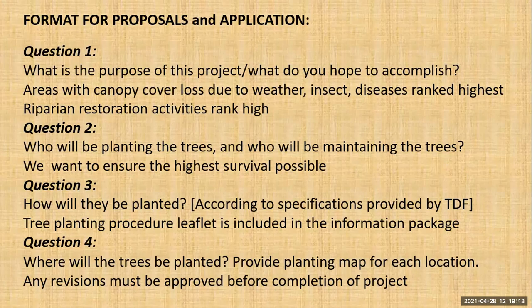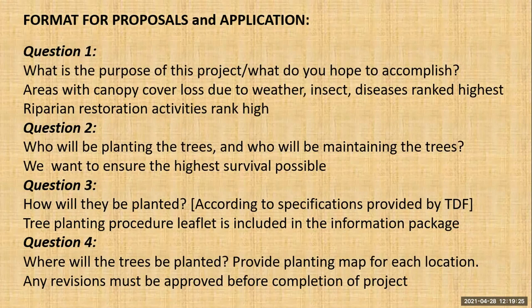A ranking committee made up of myself, my supervisor, and some council members will review and rank all the applications. Areas with canopy cover loss due to weather, insect, or disease will rank the highest. Riparian restoration activities will also rank really high. We want to know who will be planting and maintaining the trees to ensure the highest survival possible. If you say 60 volunteers will plant 250 trees, we would really require someone supervising that and ensuring they are trained.